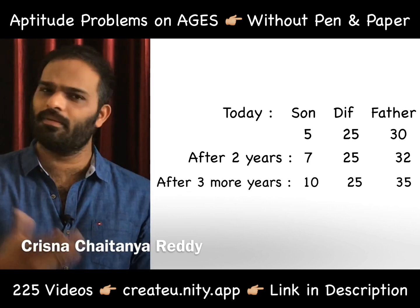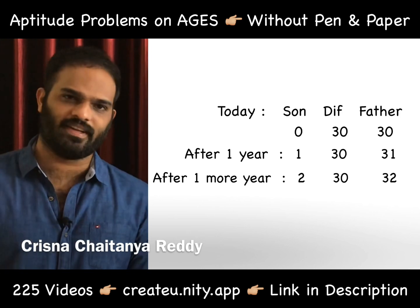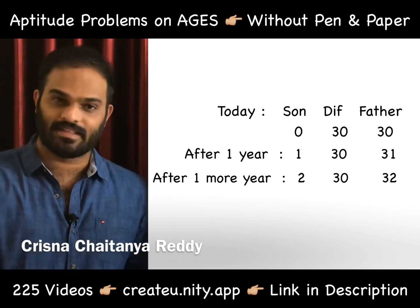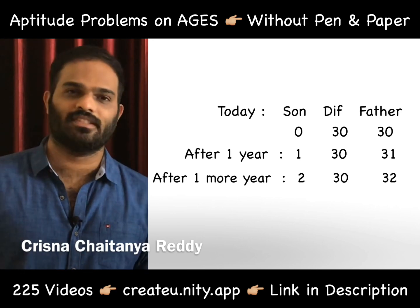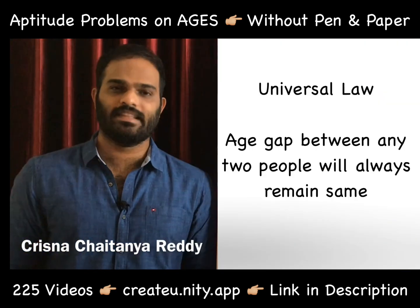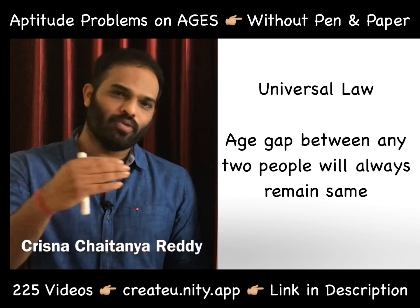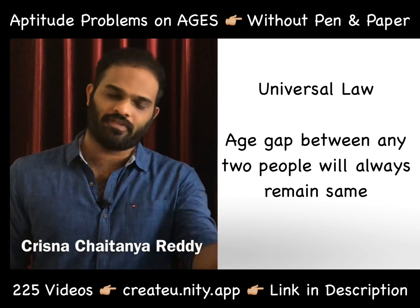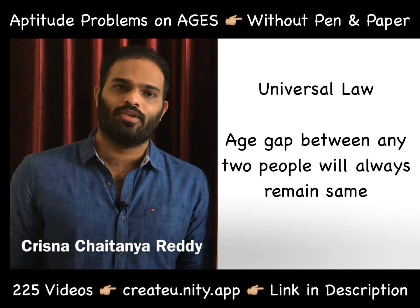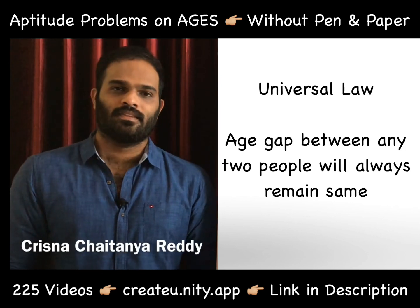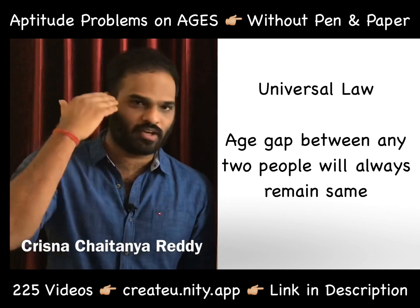The 25-year age gap between father and son will never change — if it is 25, it will be 25 forever. When son was born, father is 30; son is 0, father is 30, gap is 30. After one year: son is 1, father is 31, gap still 30. The ages will change but the gap will never change. So the first universal law of ages is: the age gap between any two persons on earth will never change.